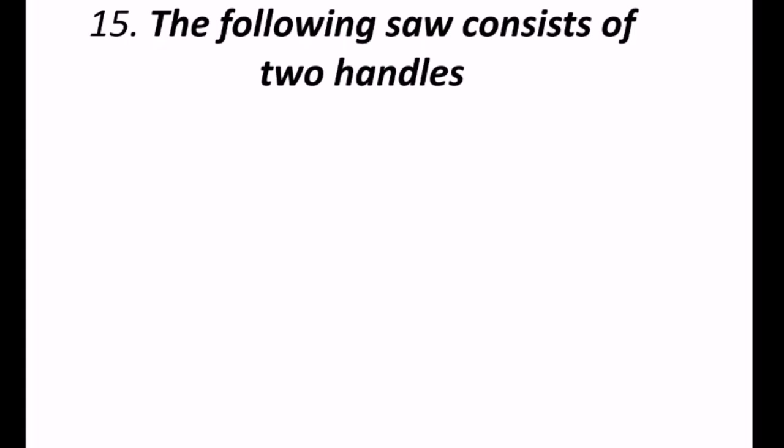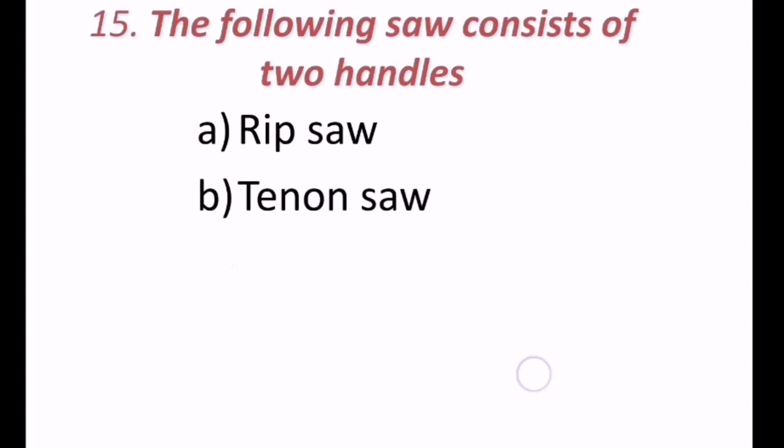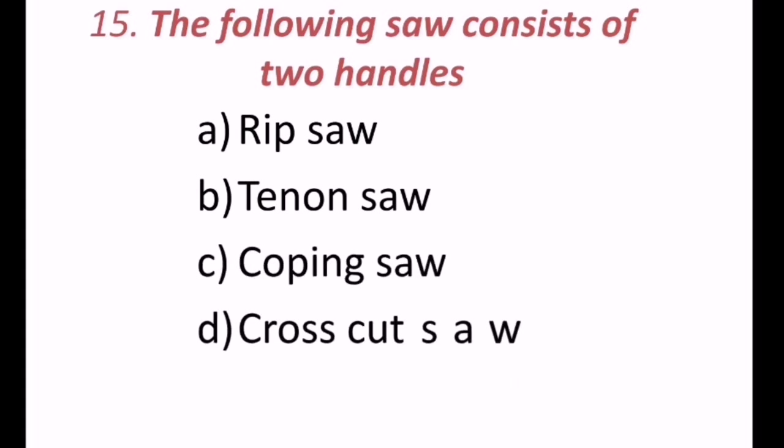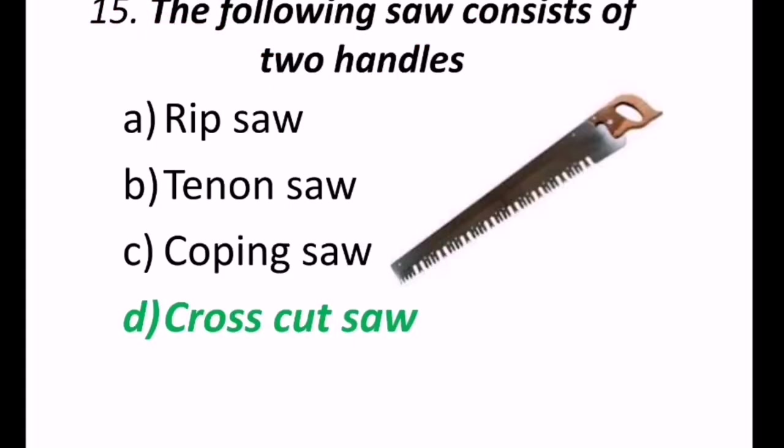15th question, the following saw consists of two handles. So which one is that? May be rip saw, tenon saw, coping saw, or cross cut saw. The correct answer is, cross cut saw. Consists of two handles.